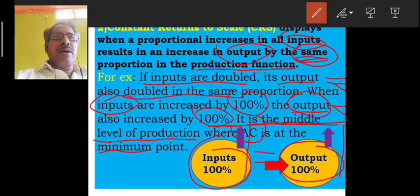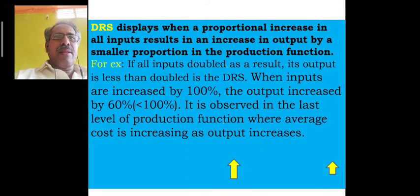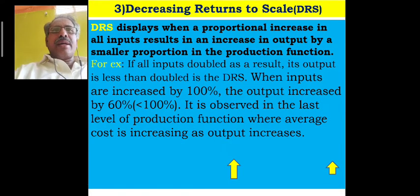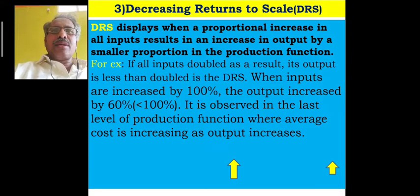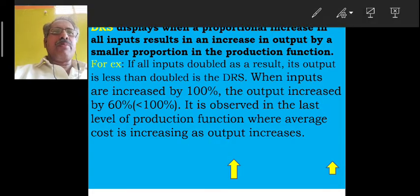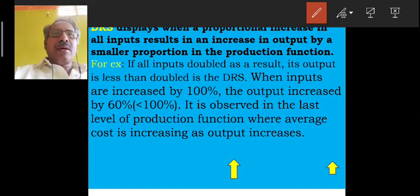Now we move on to the next level. That is DRS — Decreasing Returns to Scale — the third stage. Decreasing Returns to Scale displays when a proportional increase in all inputs results in an increase in output by a smaller proportion in the production function.